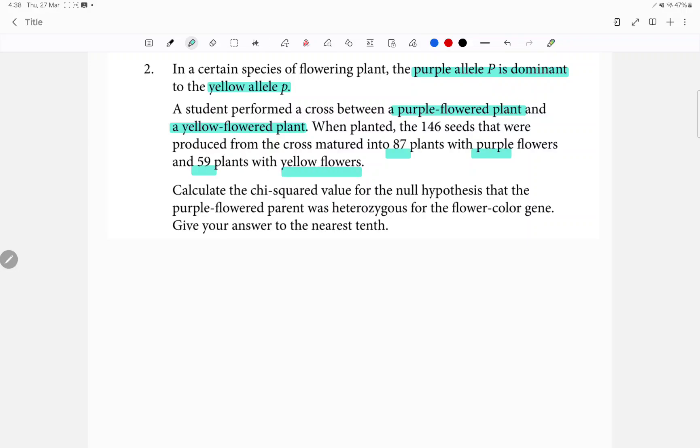Since you had two different phenotypes, that means that the parent plant that was purple was heterozygous. So that means that P1 or the P generation was capital P small p for the purple plant and small p small p for the yellow one.